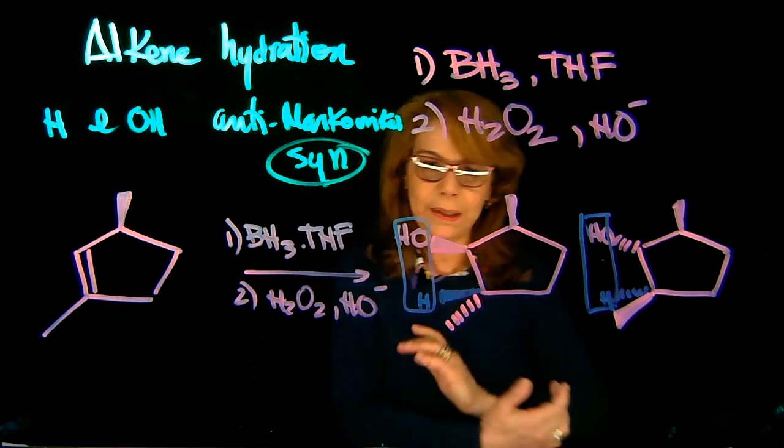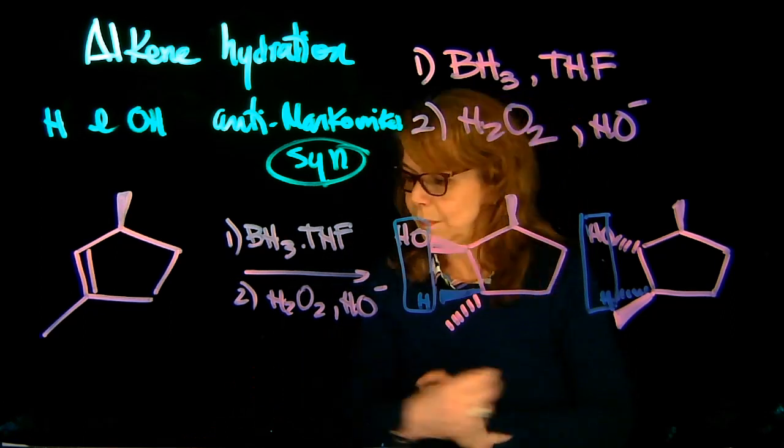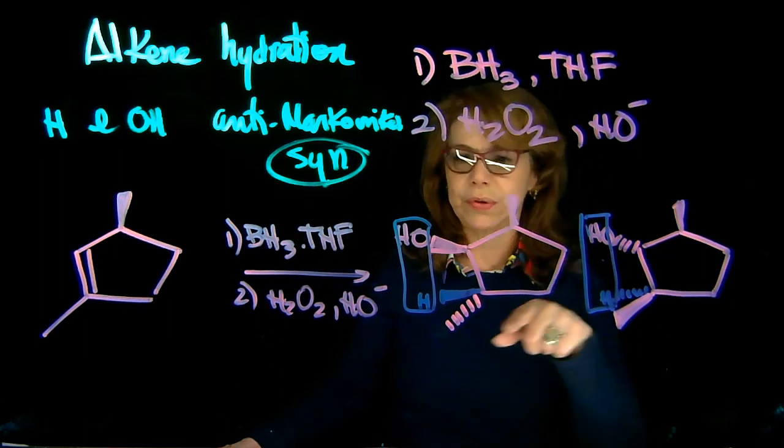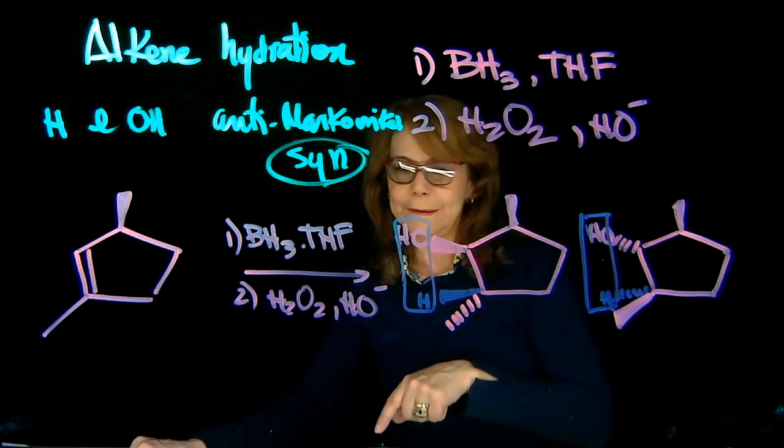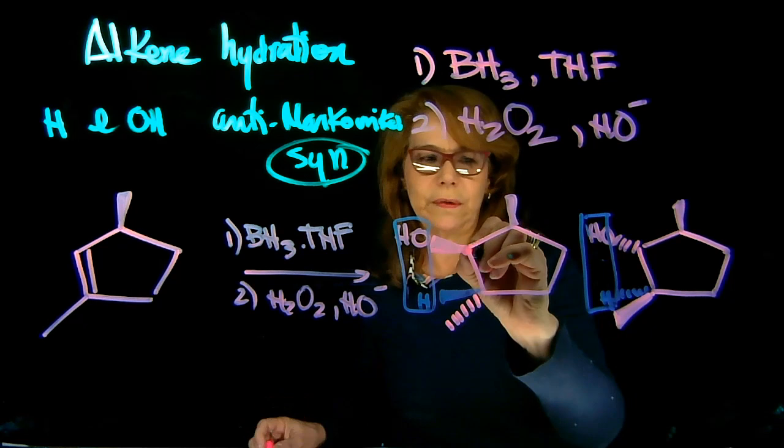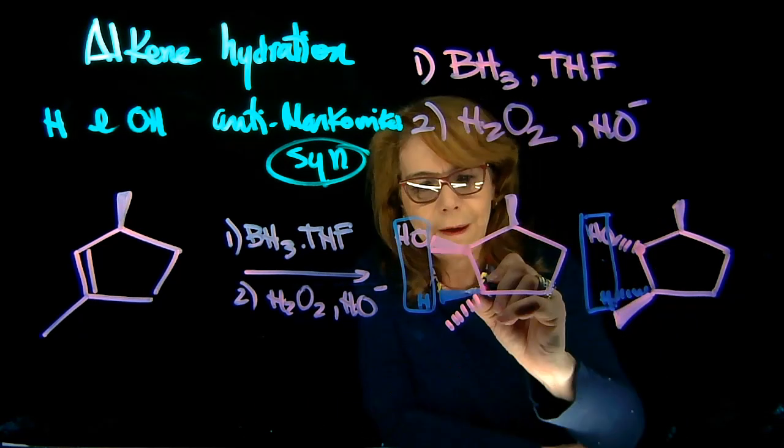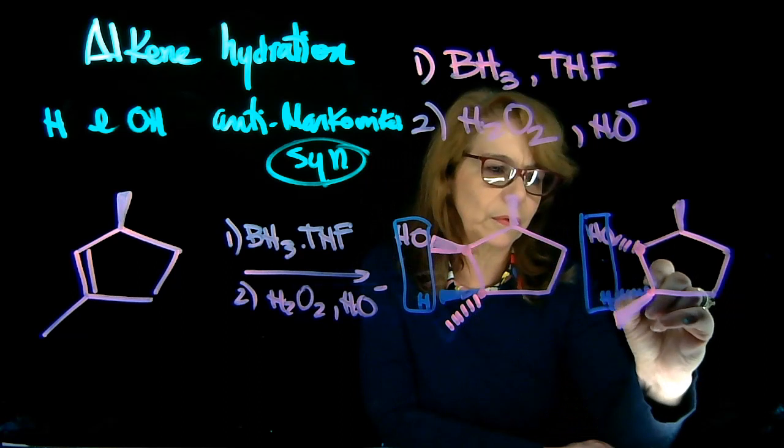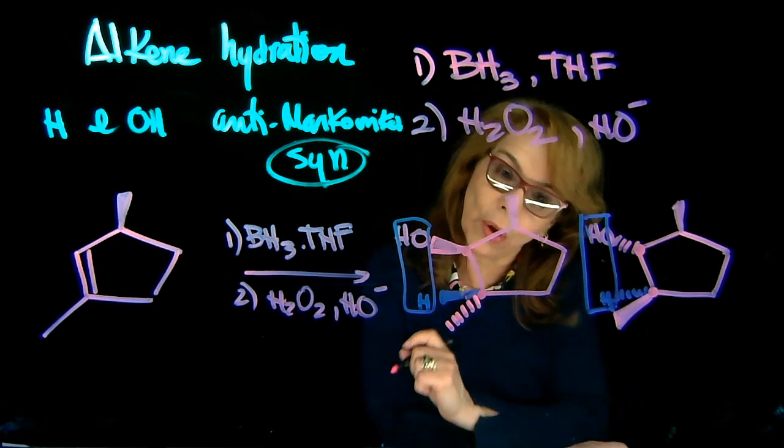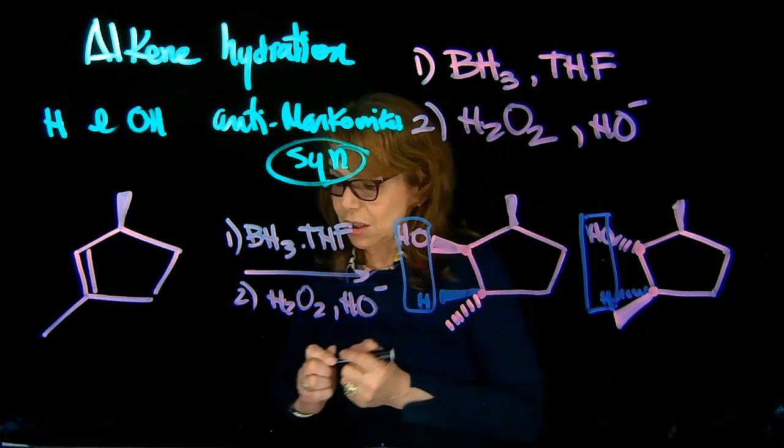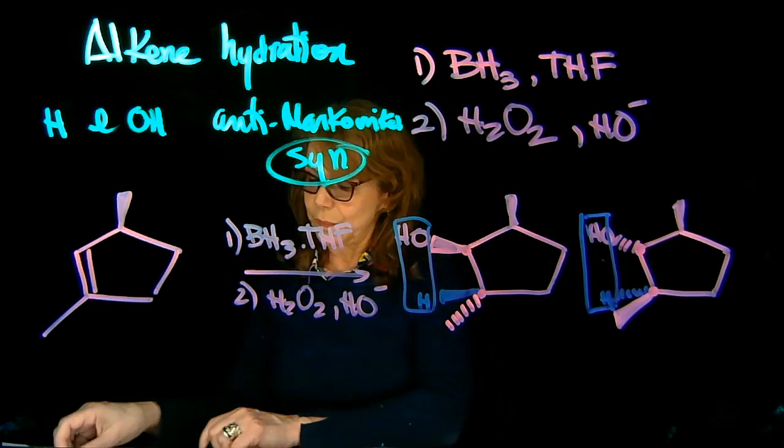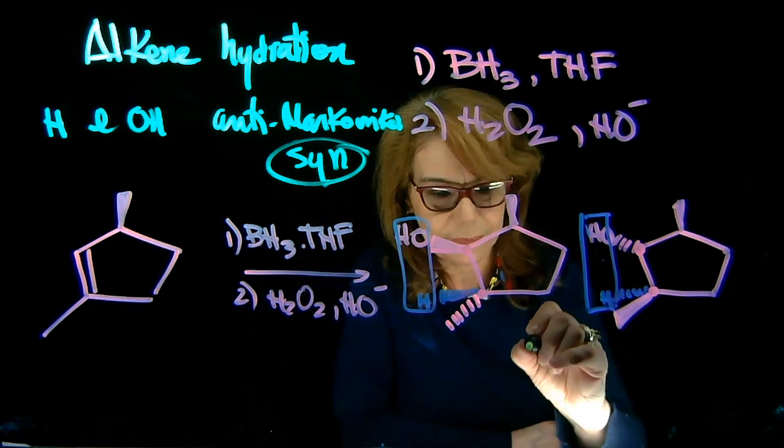If you're being asked what is the relationship between these molecules, notice that this chiral center here is inverted - opposite configuration. This center here has also the opposite configuration. However, this center we haven't touched. So these compounds, this time, are diastereomers.